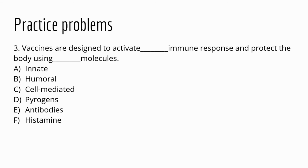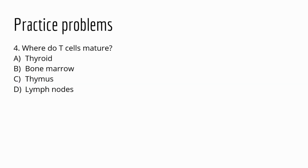Question three: vaccines are designed to activate what immune response and protect the body using what molecules? The correct answer is that vaccines are designed to make your body produce antibodies, which are involved in the humoral response, and protect the body using those antibodies.